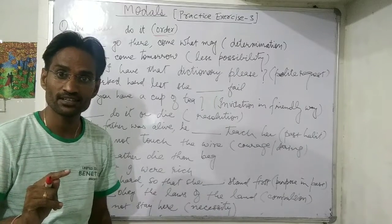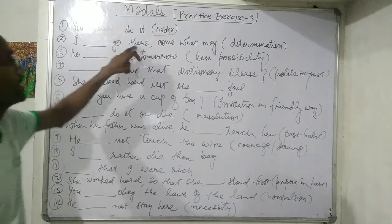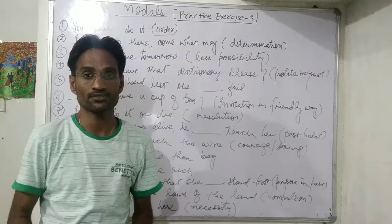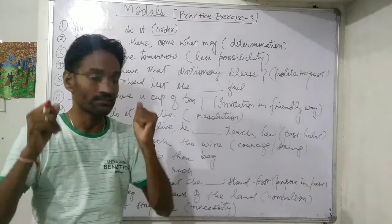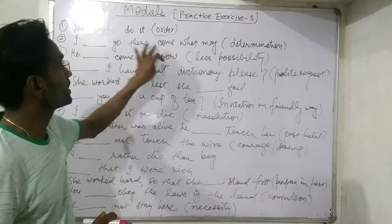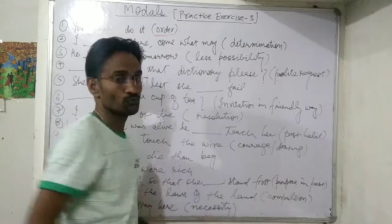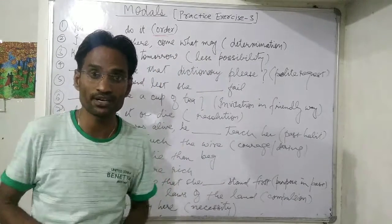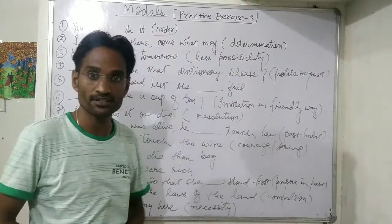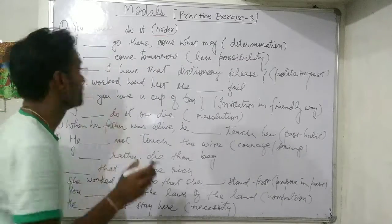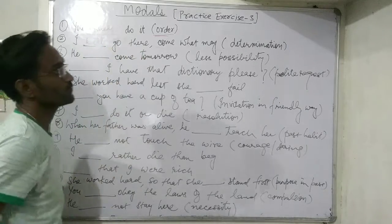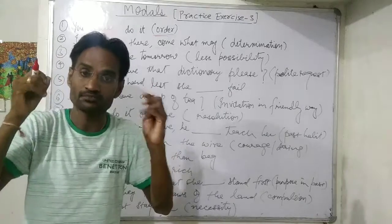Next: 'I go there come what may.' This shows determination — it means you have resolved that you will do something at any cost. 'Come what may' means whatever the situation, by rain or shine. For determination with first person, we use 'will.' So: 'I will go there come what may' — it shows my determination.